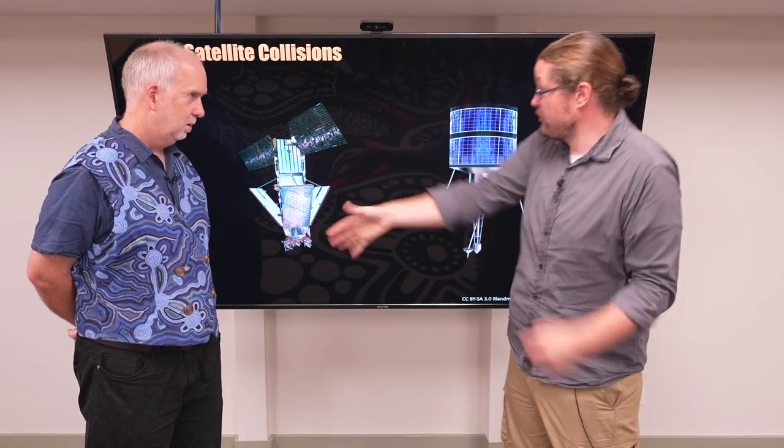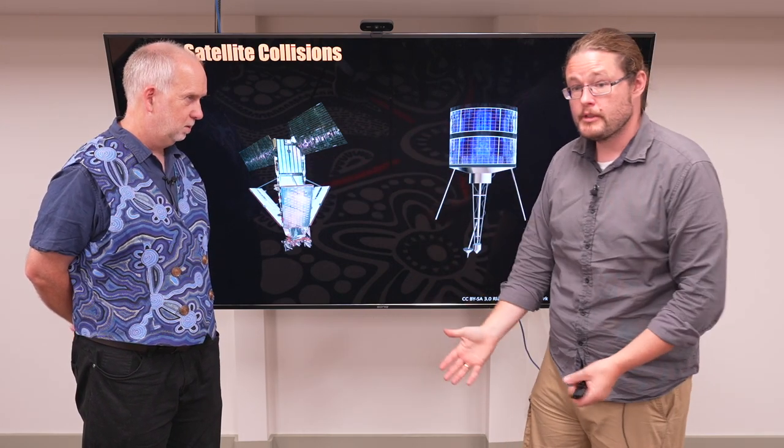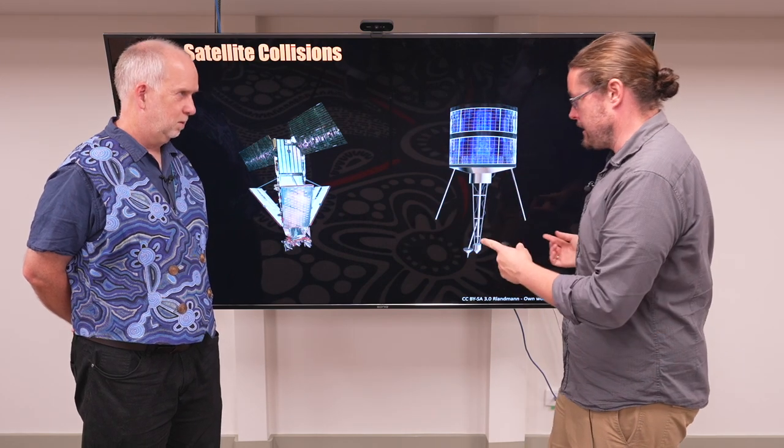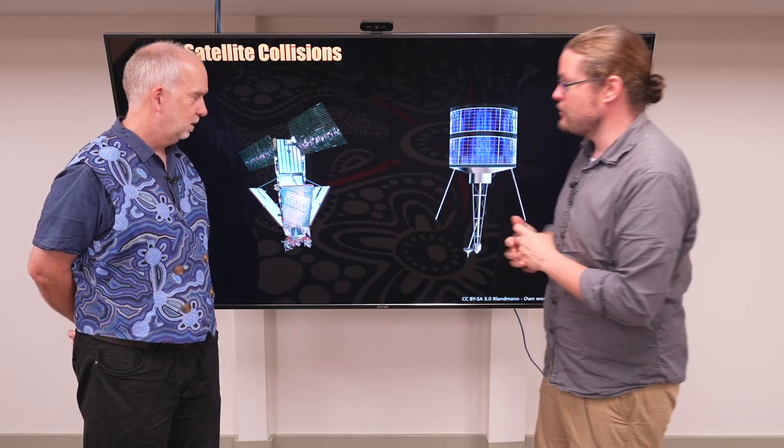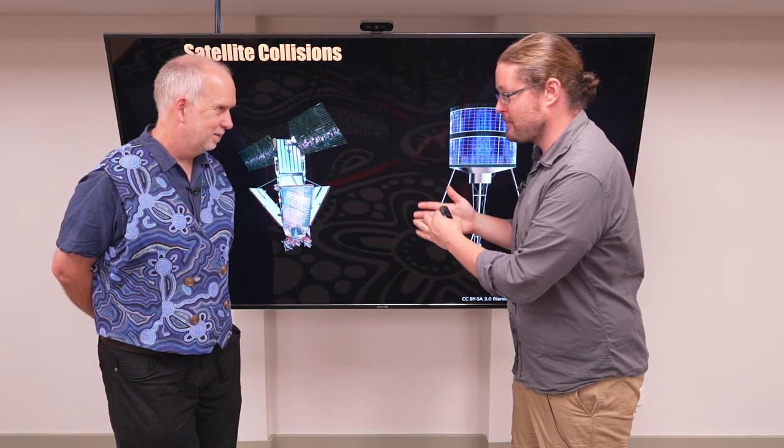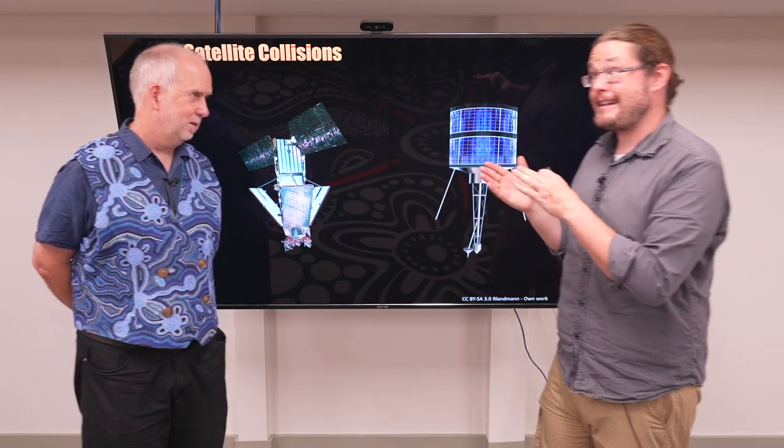Now the Iridium satellite was still working. They knew where it was and were able to track it. The problem was knowing in time that these two things were going to collide, and that's what they didn't have.